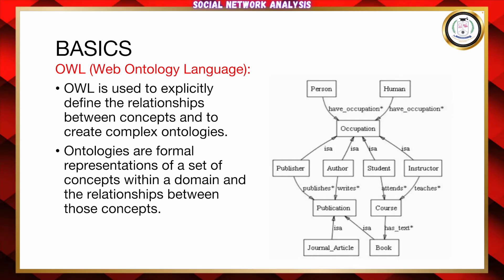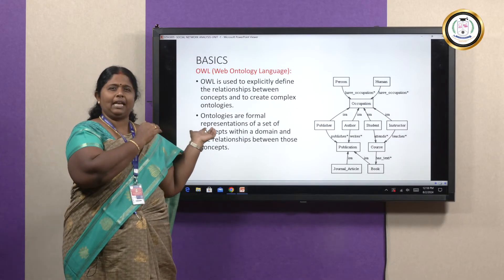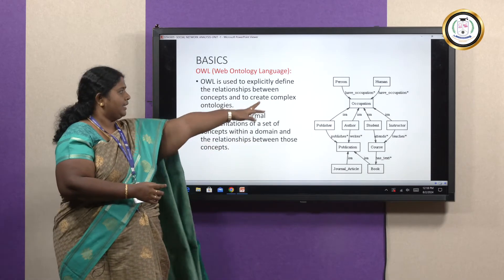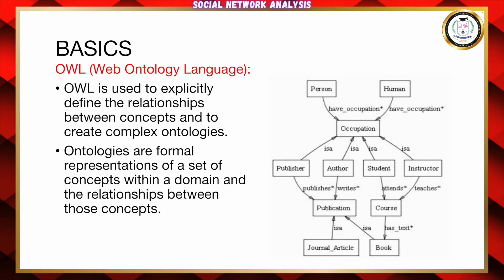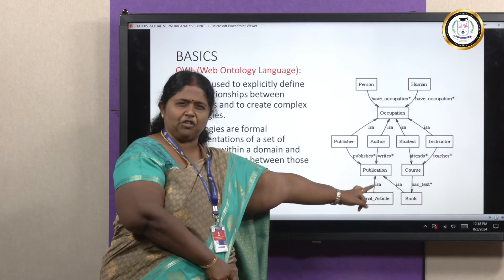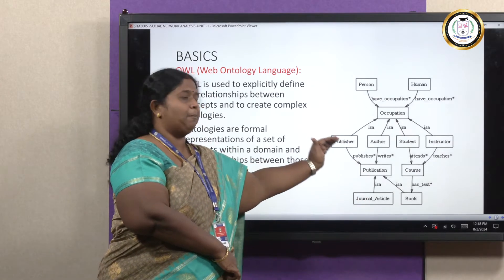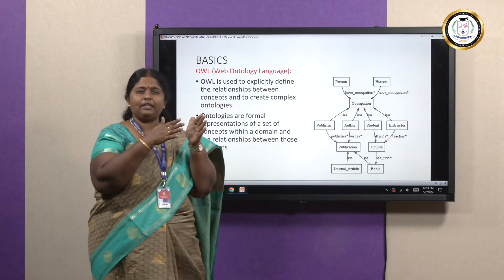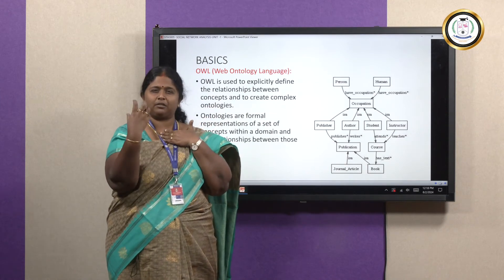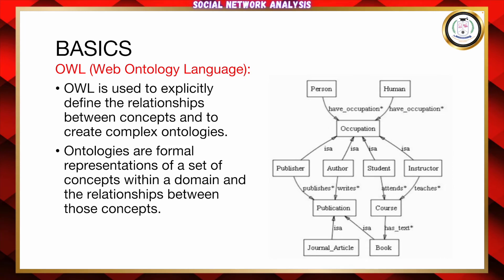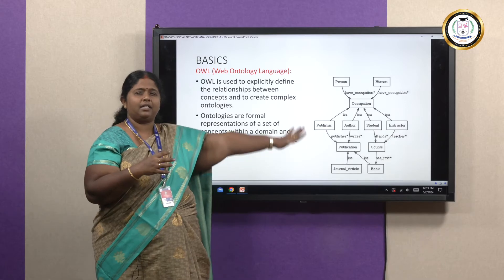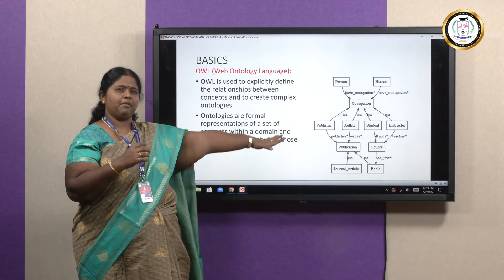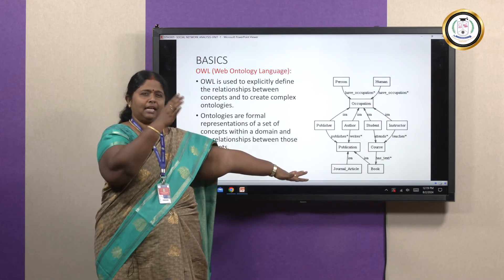OWL is an ontology language — a machine-readable language. Here we describe relationships. For instance, a journal article or a book is a kind of publication, so a generalization relationship is present. This publication can be published by either a publisher or an author. Once all this is labelled, it makes my retrieval process better. Ontology is nothing but a formal relationship of a set of concepts in a particular domain. Here, the domain could be occupation or publication, since we are basically talking about the publisher, books, and the occupation present.